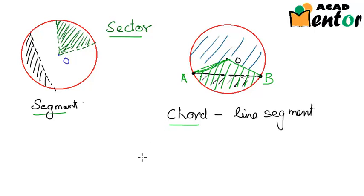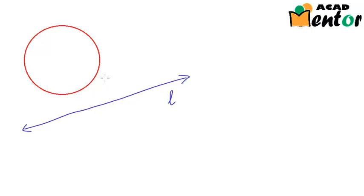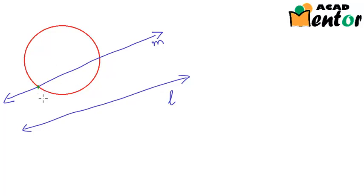Now let us see what is a secant. If we have a circle and a line L that passes outside the circle — and this is a line, not a line segment, so it extends in both directions — we see that it does not interact with the circle at all. Now if we have another line, line M, which passes through the circle, it intersects the circle at two points, point P and point Q. These two points form a chord. So line segment PQ is a chord while line M is a secant.